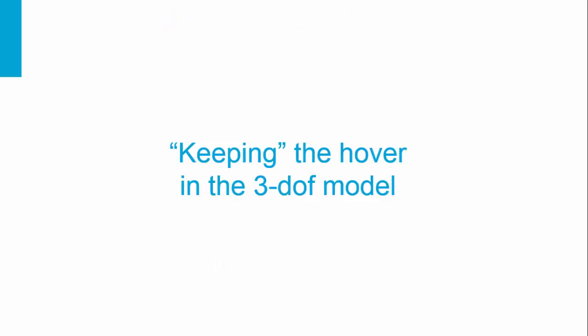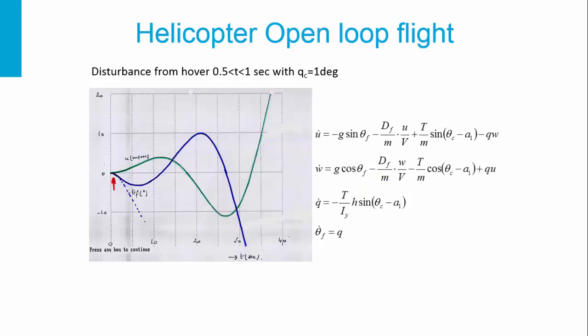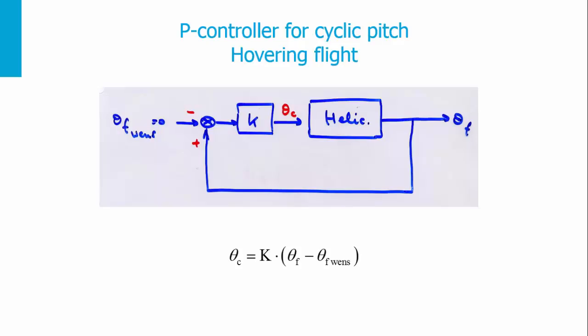Let's apply the PID controller to keep hovering in our 6 degrees of freedom model. If you remember, in the helicopter open loop flight, we applied a disturbance from hover between 0.5 and 1 second — a cyclic pitch of 1 degree. We saw the helicopter is unstable, building forward velocity U and pitch attitude. To stabilize it, we include the PID controller: the desired pitch attitude is always 0, and we add a K controller to the cyclic pitch.